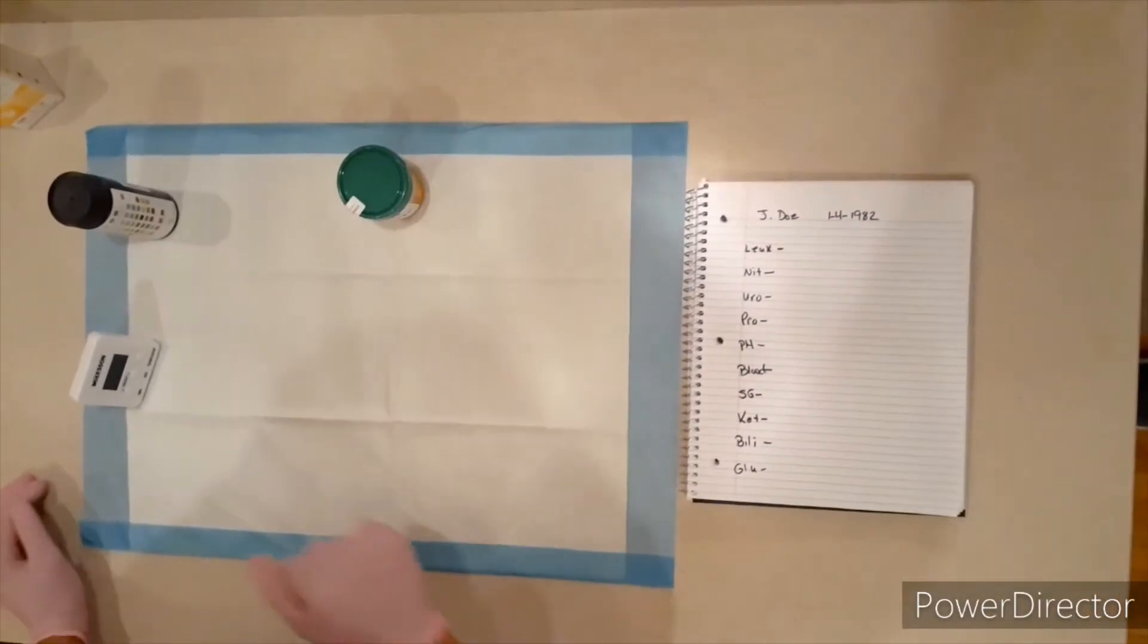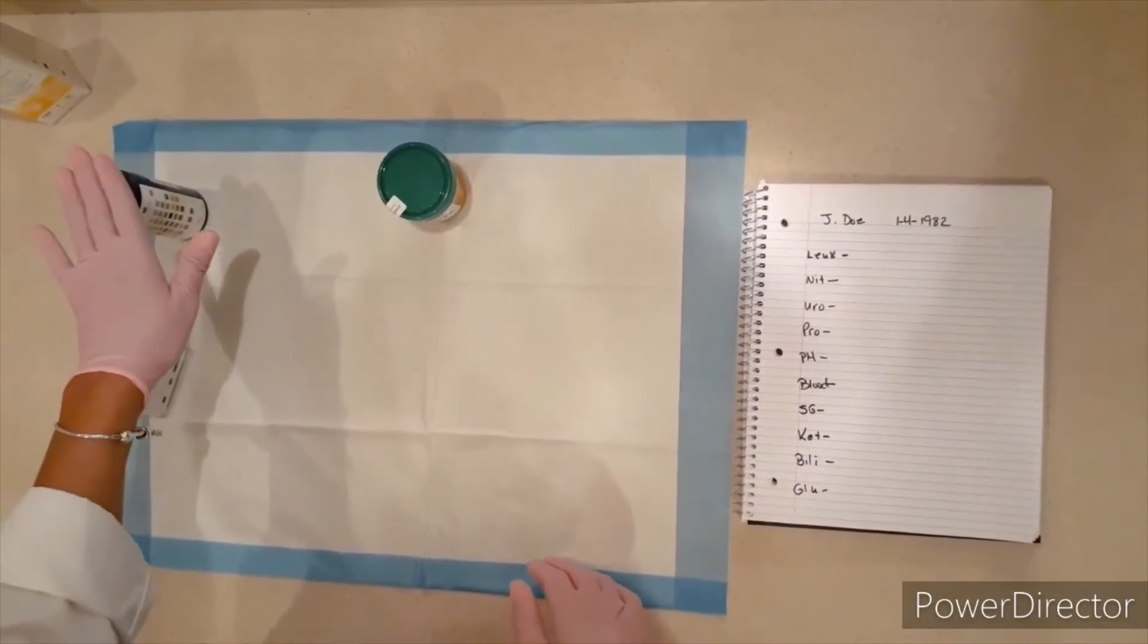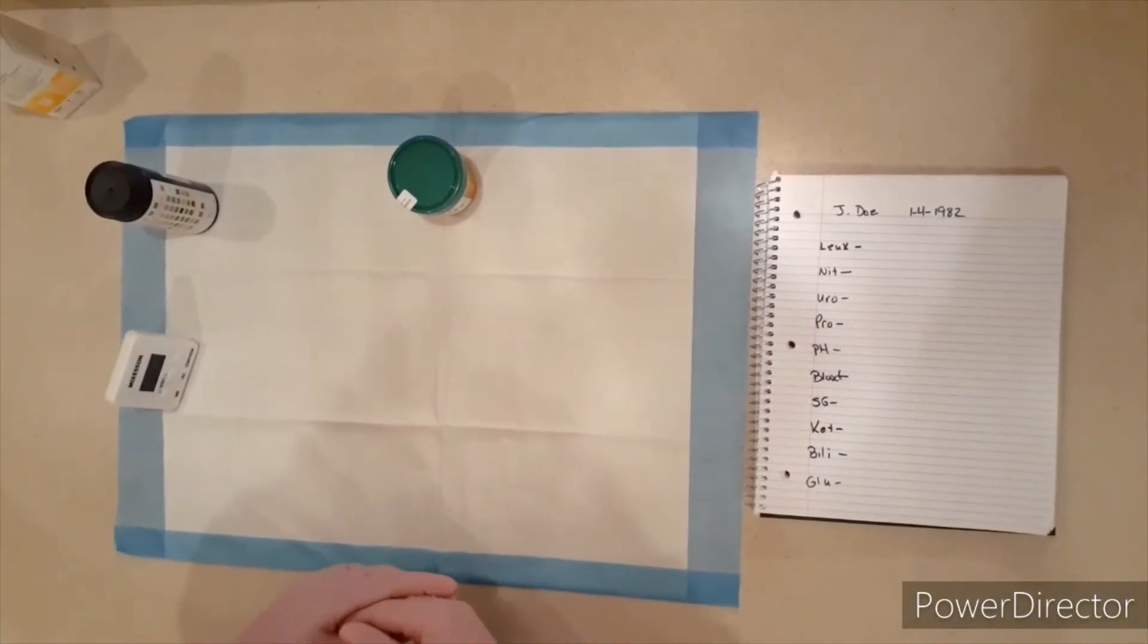Okay, we have our sample back of urine from our patient here. As you can see, I also have a timer as well as our reagent strips that we're going to use to run the urinalysis.